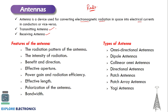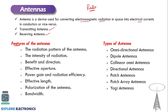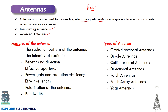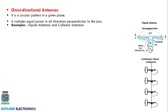The features used to choose an antenna include the radiation pattern, intensity of radiation, direction, effective aperture, gain, power gain, radiation efficiency, effective length, polarization, and bandwidth. The different types of antennas we will see are omnidirectional, dipole, collinear omni antennas, directional antennas, patch antennas, patch array antennas, and Yagi antennas. Let us see each one.